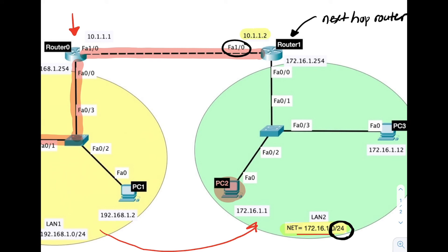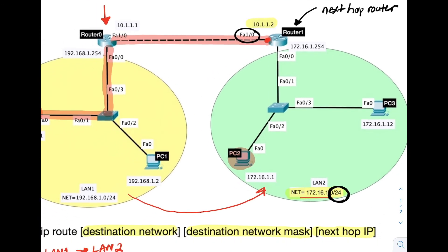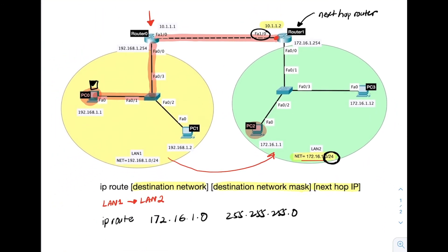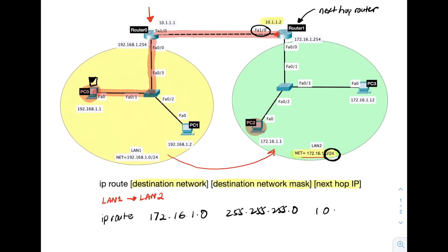We can see that the IP address of FA1/0 is 10.1.1.2. Now, we will write this IP 10.1.1.2 in the place of next hop IP parameter.